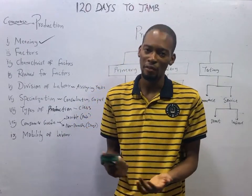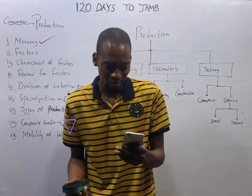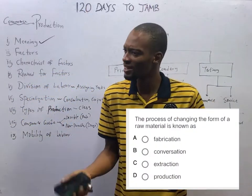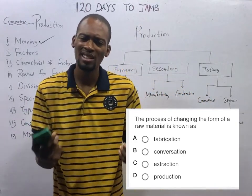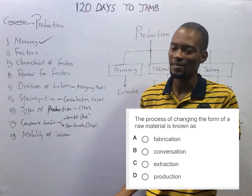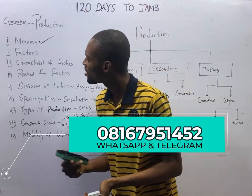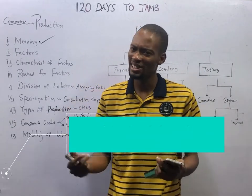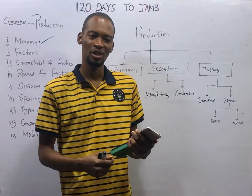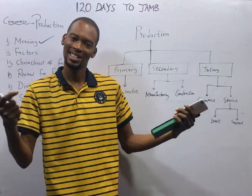If you hear production, you should understand the reason for production: to create satisfaction, to create utility. Here is a sample question: 'The process of changing the form of a raw material is known as — A: fabrication, B: convection, C: extraction, D: production.' The correct answer is D: production. Production is the process of changing the form of raw material into a finished product. For your assignment, open the Flash Nenas Jam app, click on question search, type 'production,' and you'll see questions there. If you have any challenge, let me know via my social handles. Thank you and I can't wait to see you in the next episode.